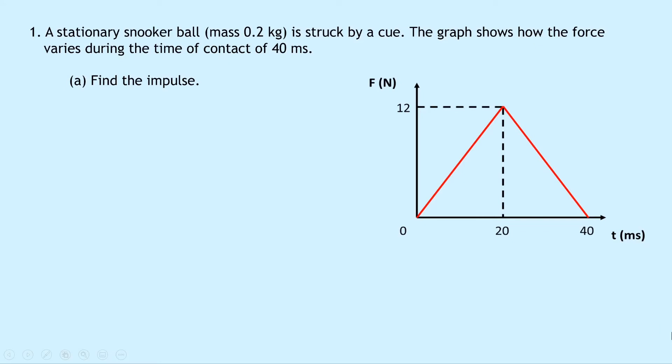Question one says that a stationary snooker ball of mass 0.2 kilograms is struck by a cue. The graph shows how the force varies during the time of contact of 40 milliseconds. So we've got our graph here of force against time and part A says to find the impulse. Well the first thing I want to point out is the units of our time down here. So watch out for this because it's in milliseconds rather than just in seconds.